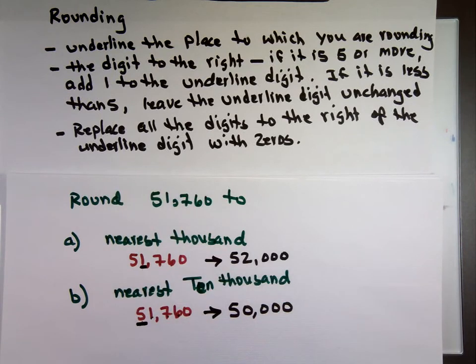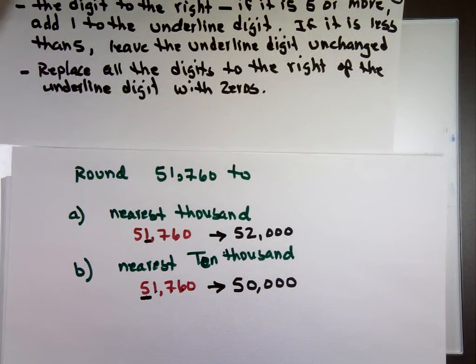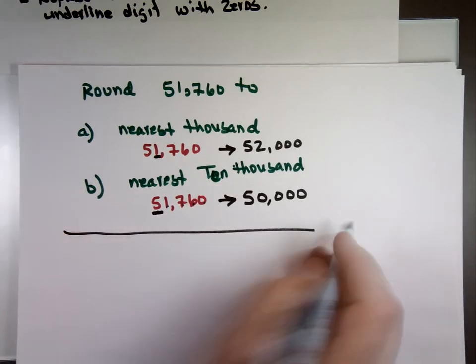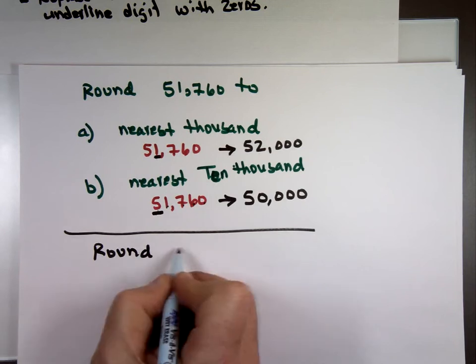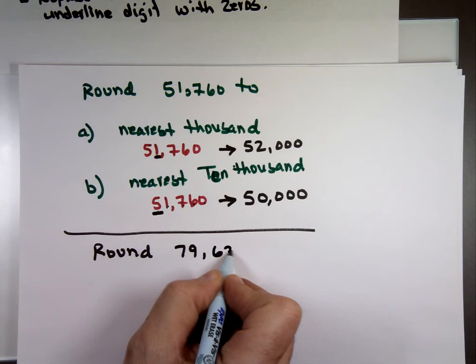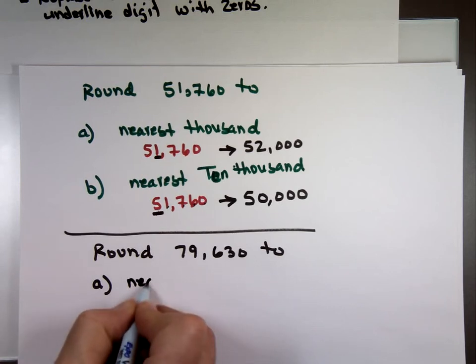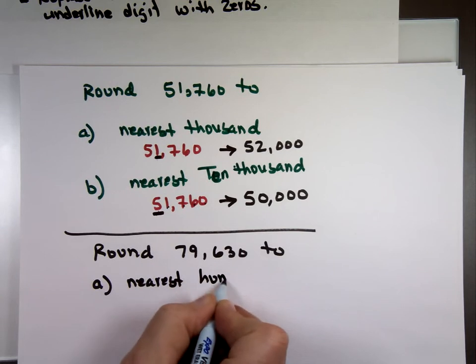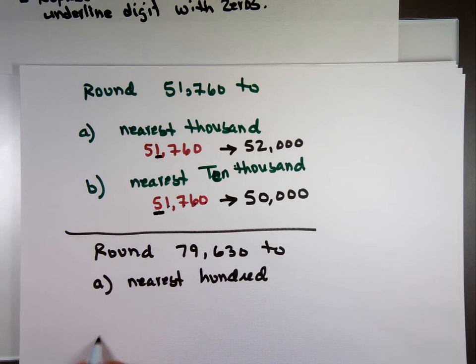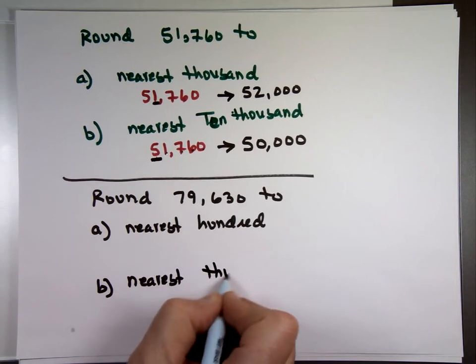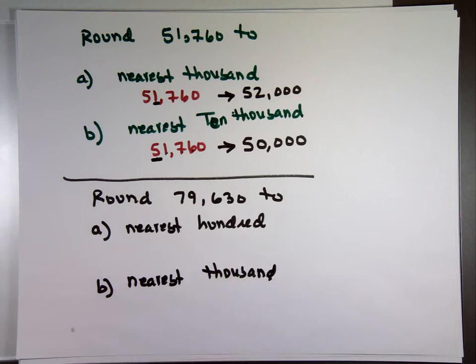Let's give you color them to try. I'll do the same thing A and B. I'll give you a number around 79,632. Part A nearest hundred. Part B nearest thousand. Take a minute, follow the steps and see if get the answer.